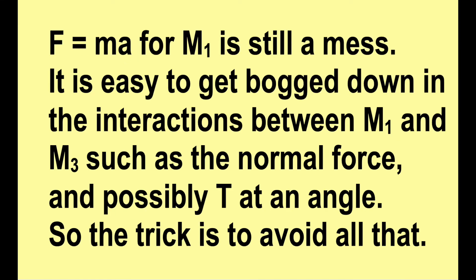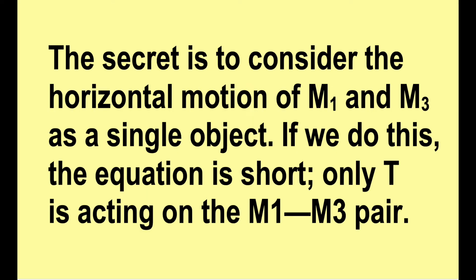This is the hardest part of a physics problem, figuring out which equations to use and write down. F equals ma for m1 is still a mess. It's easy to get bogged down in the interactions between m1 and m3, such as that normal force that might be there. The tension might be at an angle. So the trick is to avoid all that. The secret is to consider the horizontal motion of m1 and m3 as a single object. They aren't a single object in the y direction, but in the x direction they are moving together.